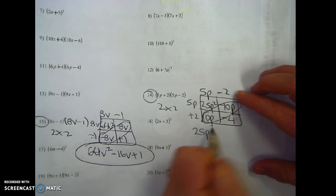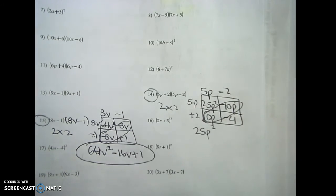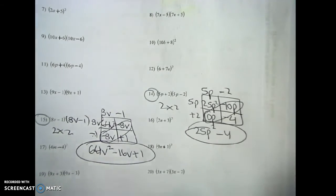Bring down the first. Now, they're not the same, so we're not adding them. They're opposite. And 10 minus 10, gone. 25p squared minus 4.